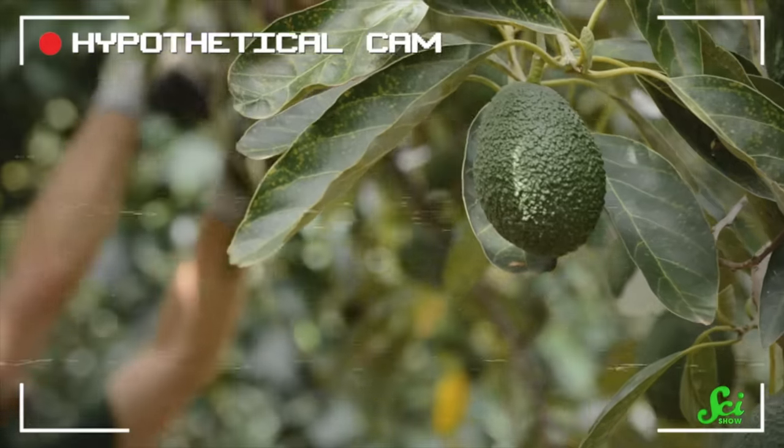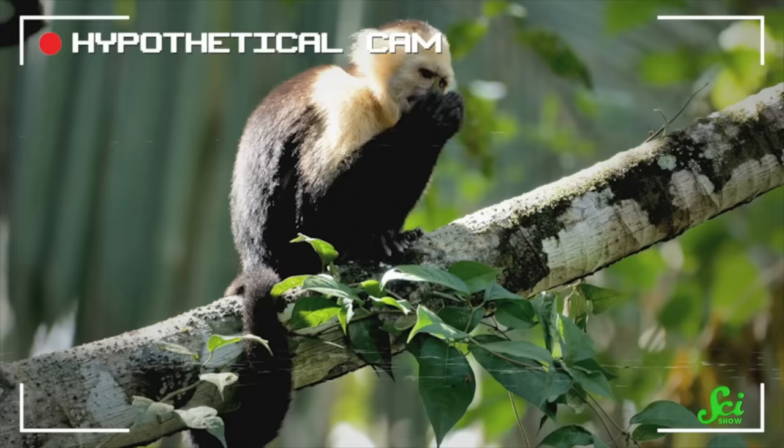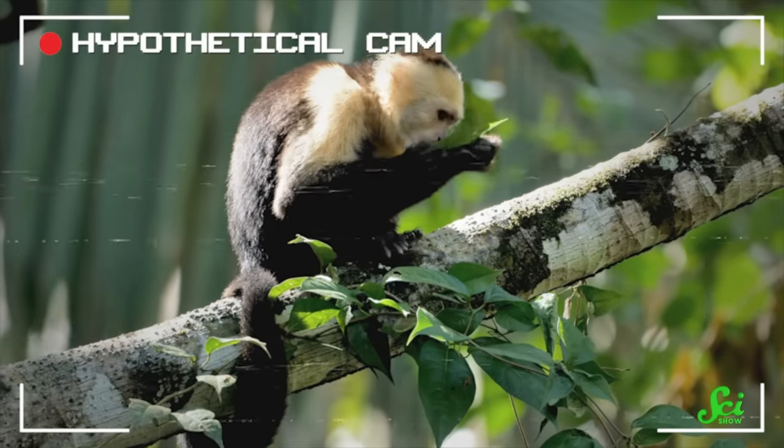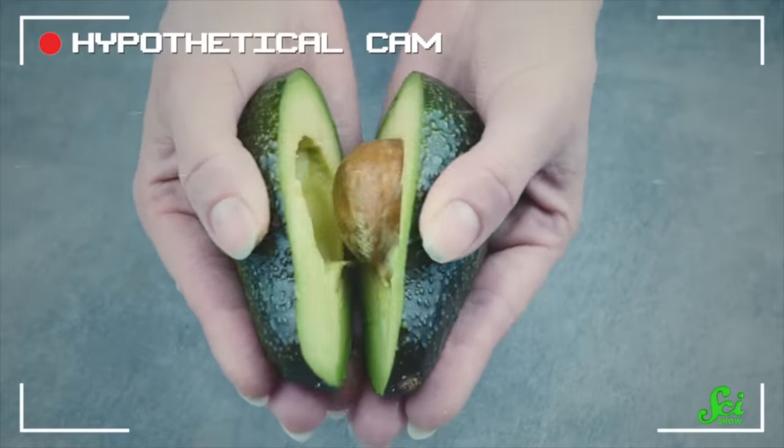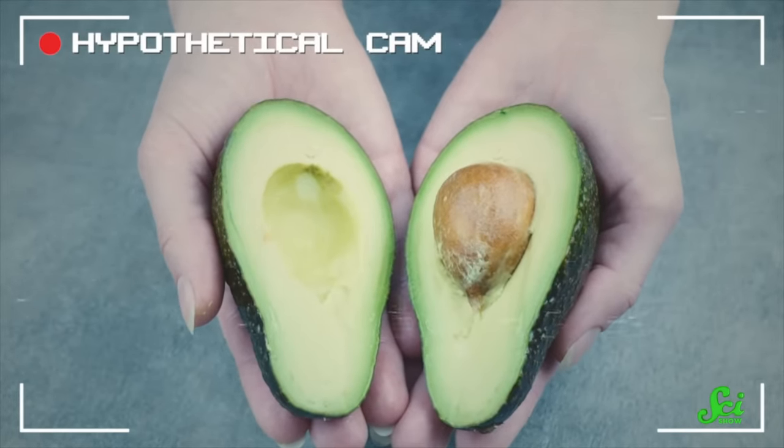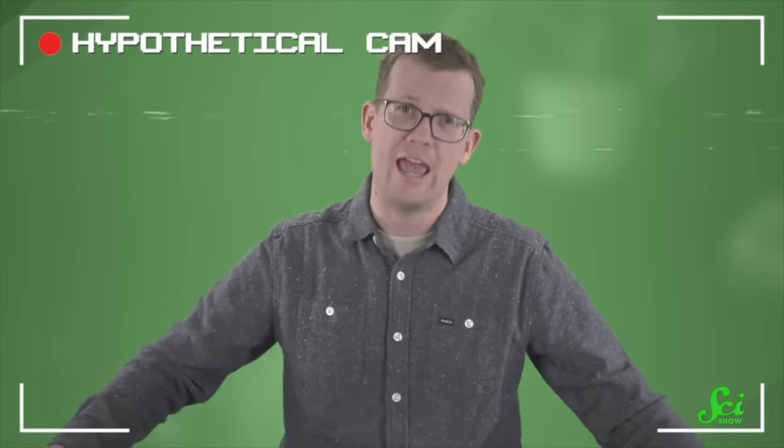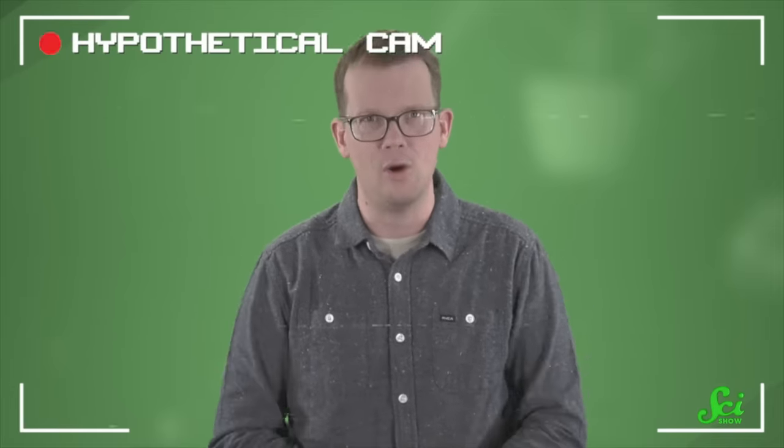Plants evolved to have fruit in order to attract animals, so that the animals can poop out the seeds somewhere further away, which helps them spread around. And unlike other fruit that has dainty little pits, avocados have these big honkin' seeds, which means avocados would have been spread around by big honkin' animals that can swallow a whole avocado pit.